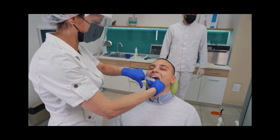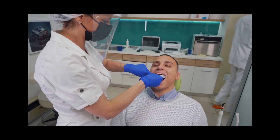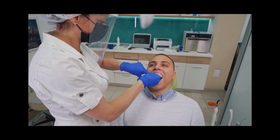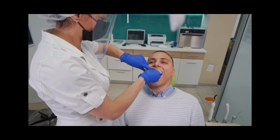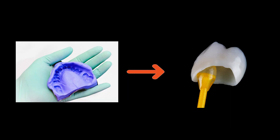Once the tooth is prepared, the dentist will take an impression of the tooth and the surrounding teeth. This impression is sent to a dental laboratory, where the custom crown is fabricated.